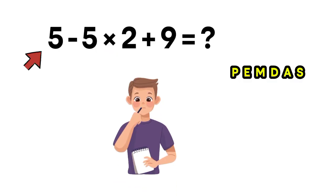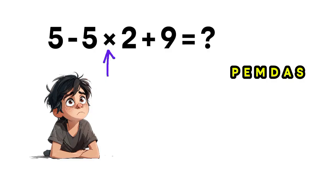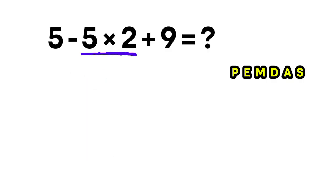Let's solve it the correct way. Inside our expression, we look for multiplication. We have 5 times 2 and 5 times 2 equals 10. So now the entire expression becomes 5 minus 10 plus 9.